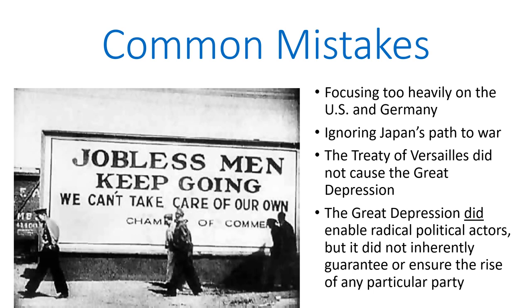One thing that the Great Depression did do is to enable radical political actors in a number of countries, including the US and Germany, but also pretty much every major nation involved in World War II. However, one thing that people are also prone to do is to look at certain political outcomes such as the rise of Hitler as being inevitable. I will argue in this video that without the combination of German resentment due to the Treaty of Versailles and the desperation created by the Great Depression, the rise of someone like Hitler would be far more unlikely, and that would have changed history dramatically.